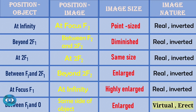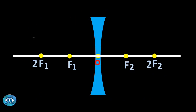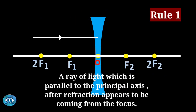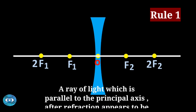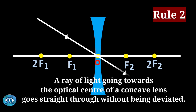Now let's see the light ray rules for concave lens. Rule one: a ray of light parallel to the principal axis, after refraction, appears to be coming from the focus. Rule number two: a ray of light going towards the optical center of a concave lens goes straight through without being deviated.